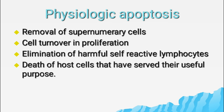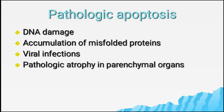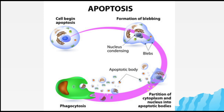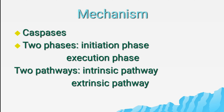Apoptosis can occur in both physiologic and pathologic conditions. It is induced by viral infections or by host immune response, as in viral hepatitis, and by pathologic atrophy in parenchymal organs after duct obstruction, as in the pancreas, salivary gland, and kidney. The cell begins apoptosis with blebbing and nuclear condensation, forming apoptotic bodies. Cell shrinkage occurs, chromatin condenses, cytoplasm becomes dense, and cell organelles remain normal.